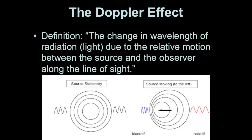We're going to talk about the Doppler shift of light. This is a complex topic in astronomy, but it's one that's very important to help us understand how we analyze the light that we get from stars and other objects. The Doppler effect is the change in wavelength that we receive from some source, due to the relative motion between the source of that light and the observer along a line of sight.